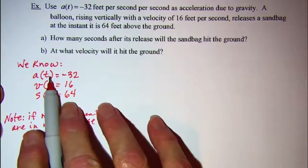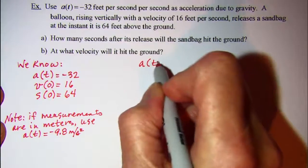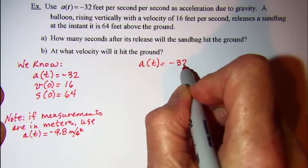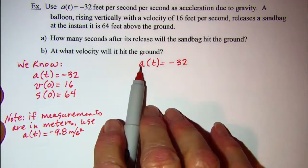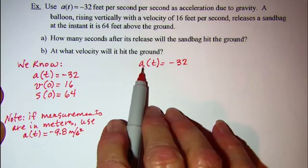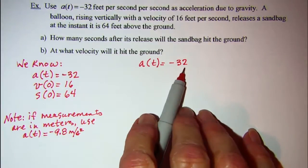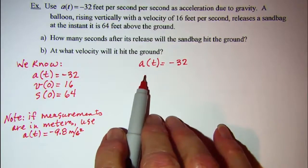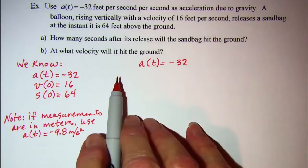Now we know that if we start with acceleration and integrate it, we'll go back to the velocity function. I want to integrate both sides so that I can get my velocity function, and then I'll integrate that to go back to my position function.